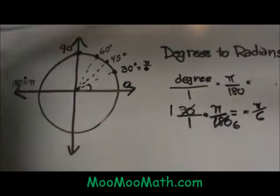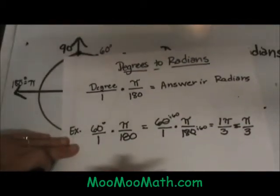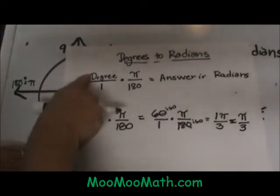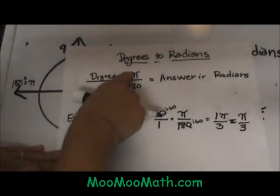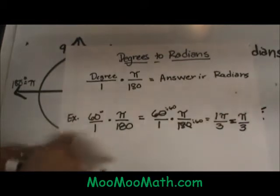Here is a quick little summary. Degrees to radians: you use this ratio, degree over one times pi over 180. That gives you your answer in radians.